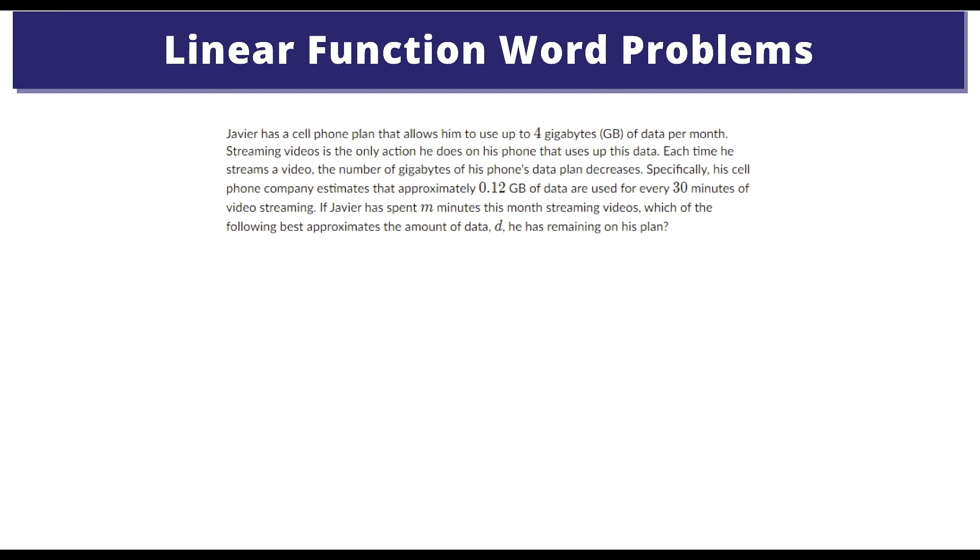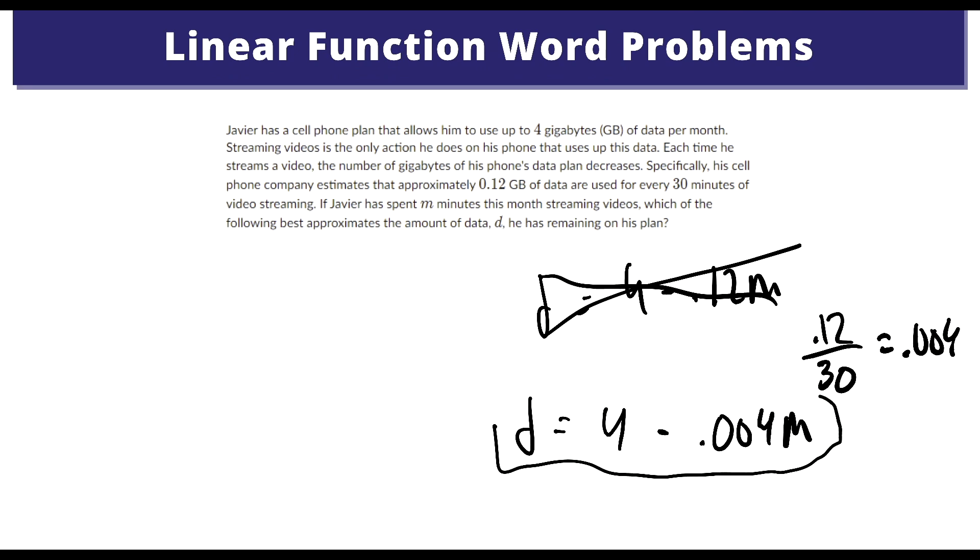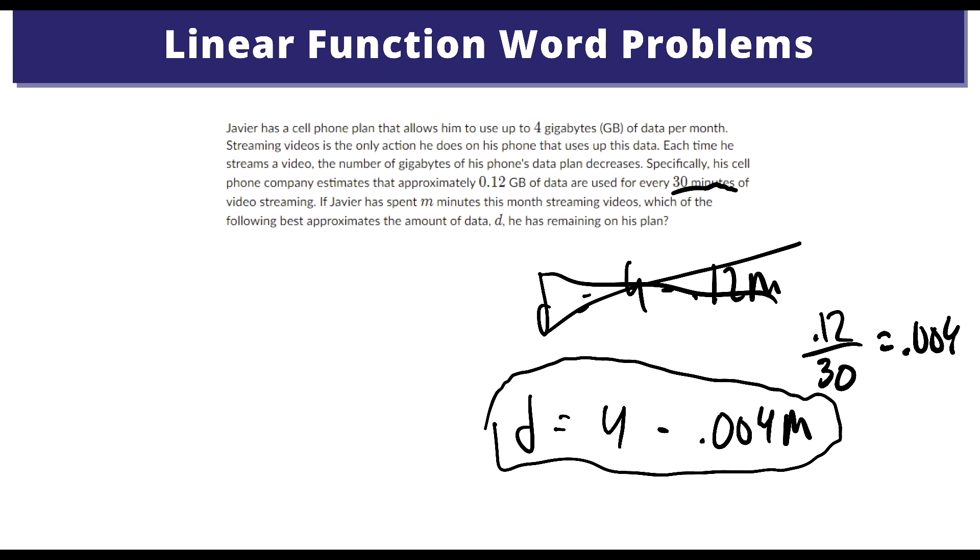Okay, so people would usually jump to conclusions. We have to see how much per minute, and because every 30 minutes he is losing 0.12, we have to do 0.12 divided by 30, and we get 0.004. And then we could plug it back into the equation: 4 minus 0.004m. And that's how much data he would have after m minutes of use on average. So you really have to read the question carefully and realize it's every 30 minutes.